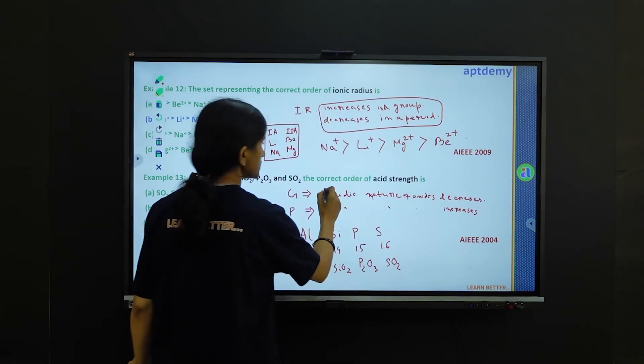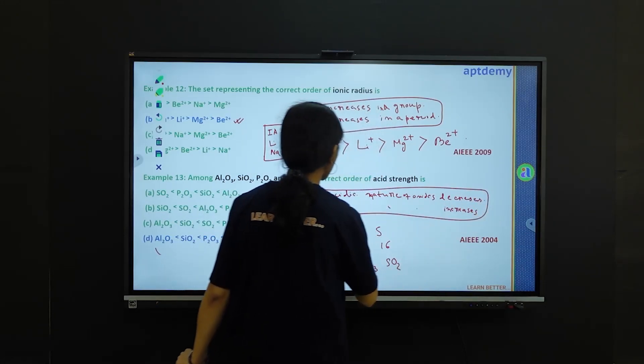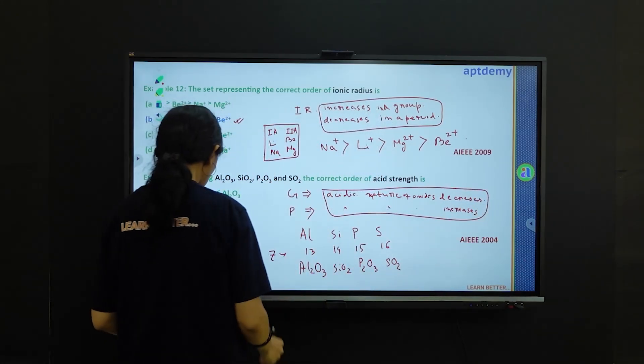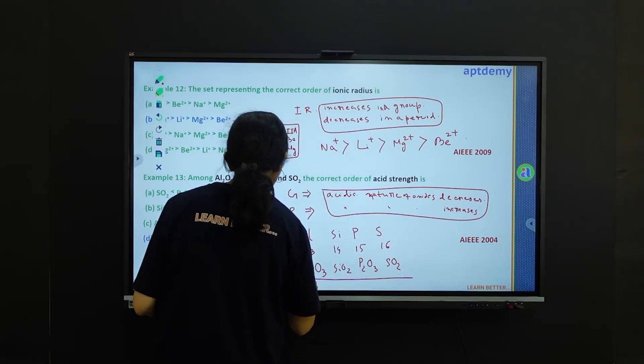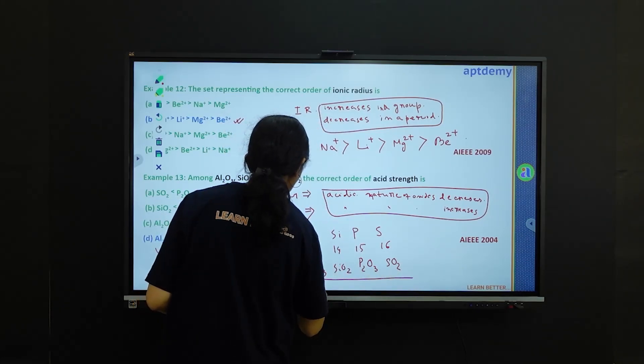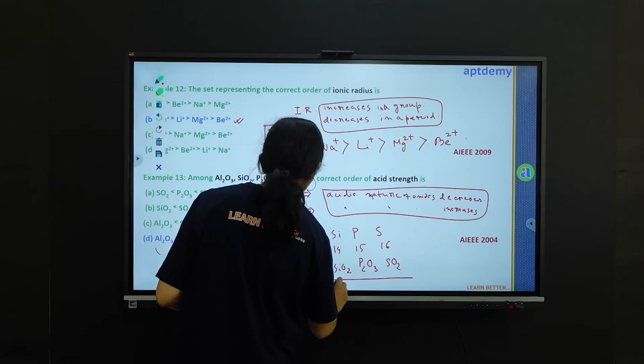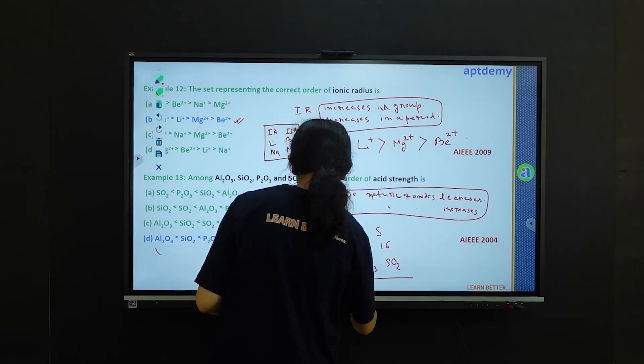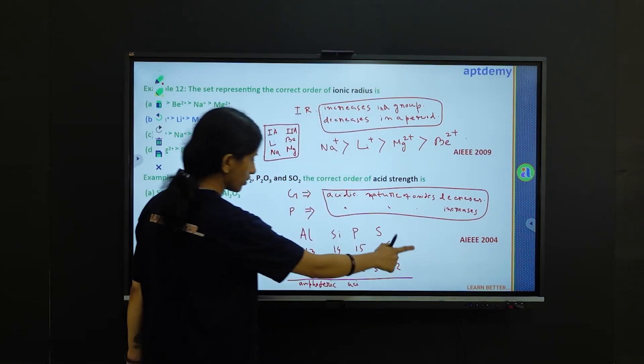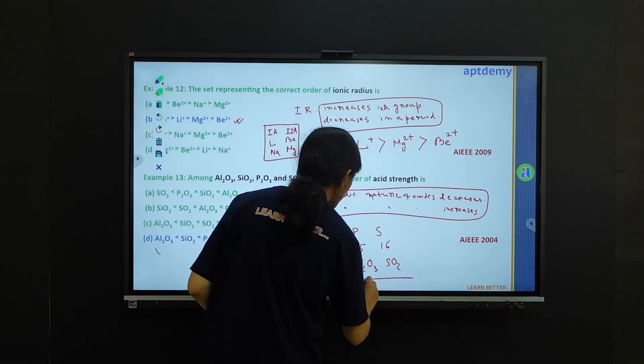Now if you consider this fact. Then what you will see is that Al2O3 is amphoteric in nature, we have already learnt about this. And if you go along a period, acidic nature will increase.